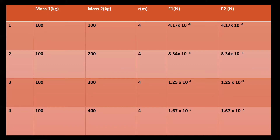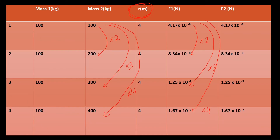Mass of object 1 stays the same — that's our control variable. Distance also stays the same — also a control variable. But mass of object 2 keeps changing. So the conclusion is that the force these two objects apply on each other is proportional to the mass of object 2. If we repeat this simulation keeping mass of object 2 constant and changing mass of object 1, we get the same result — F is also proportional to M1. So far we can say the magnitude of force is proportional to M1 times M2.